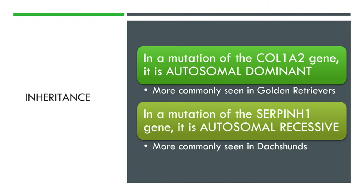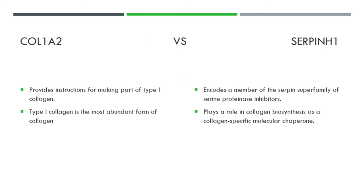The inheritance is interesting because depending on which gene is affected, it can be either autosomal recessive or autosomal dominant. A mutation in the col1a2 gene is autosomal dominant, so you only need one copy of the gene for the disease to present itself, and this is more commonly seen in golden retrievers — referred to as the golden retriever type. A mutation in the SERPINH1 gene is autosomal recessive, so you need both copies of the gene for the disease to present, and this is more commonly seen in dachshunds — referred to as the dachshund type.